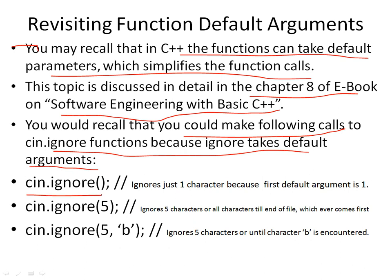If I make a call like this, it ignores just one character because the first default argument is one. If I make a call like this where the argument is five, it ignores five characters or all the characters till the end of the file, whichever one comes first, because the second default argument is the EOF character. And if I make a function call like this one, it will ignore either five characters or up to character B including that character, whichever comes first. These three calls become possible because there are default arguments for two parameters: the first one takes an integer, the second one takes a character.